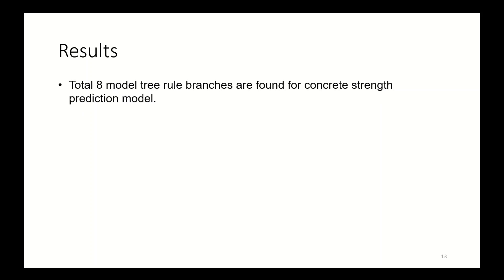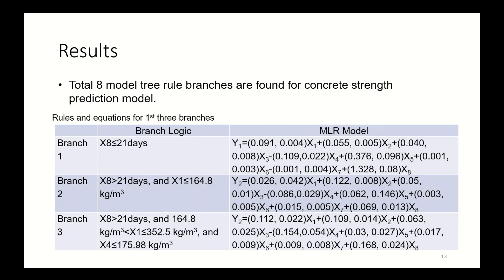For this example case, a total of eight modulatory rules or rule branches were found. Rules and equations for first three branches are shown in this table.